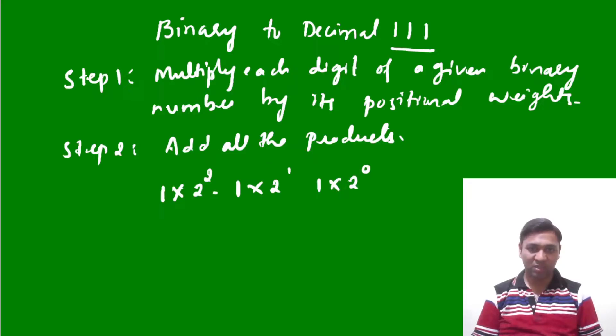Here I'm going to write plus signs in between these products. Now let us further simplify. 2² is 4, so 1 × 4 = 4. Here I'll write 4 plus.